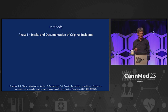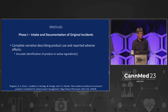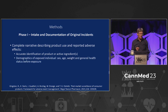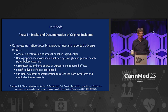So phase one: intake and documentation. You get a narrative of the product use and reported adverse effects, and you're looking for accurate identification of products or active ingredients. A lot of published studies on herbal medicines never characterized the product, so we don't even know if it's really the right product or if it actually had the right ingredients it claimed. We also picked up some demographics, and we looked at circumstances and time course of exposure, specific adverse effects experienced, and sufficient symptom characterization to categorize it — is this real, is it something we need to pursue further?